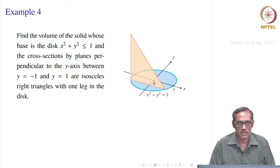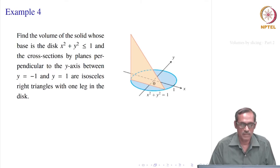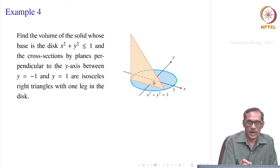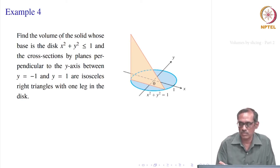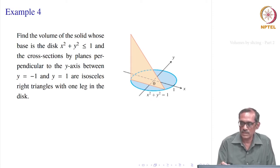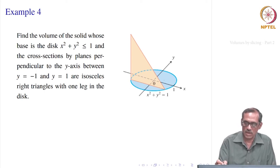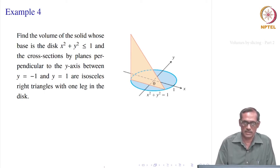Let us take the next example. Here, we want to find the volume of a solid whose base is the disc x² + y² ≤ 1. That is painted blue here — that is the disc. It is a solid, so you get the circle along with the points inside it; that is why you call it a disc.